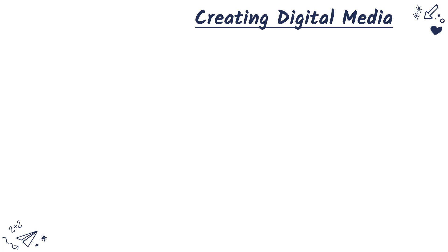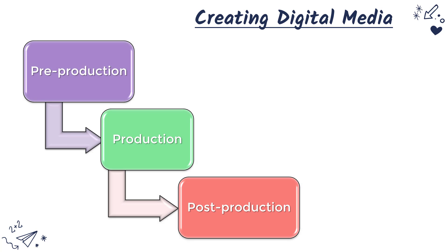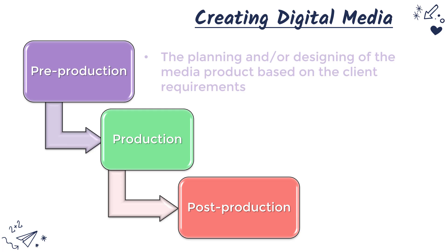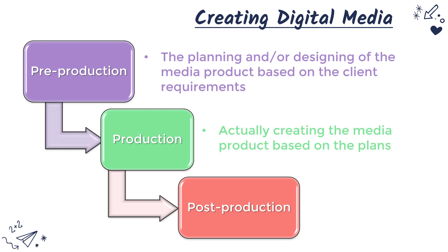Now hopefully you have an idea of what is meant by a digital media product — really anything which uses technology to convey some message. We can talk about what is really a three-step process to actually create digital media. The first stage is pre-production, which is what this unit is called and what my future videos will focus on, as that's what's covered in the exam. But you'll also be doing production and post-production. Pre-production is where you do the planning and perhaps some designing of a media product based on client requirements.